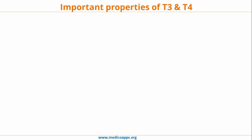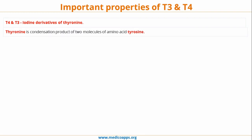T3 and T4 are iodine derivatives of tyronine, whereas tyronine itself is formed by the condensation of two molecules of the amino acid tyrosine. So two molecules of tyrosine combine to form tyronine, and once this tyronine is iodized it becomes T3 and T4.